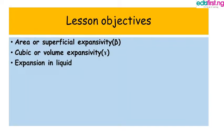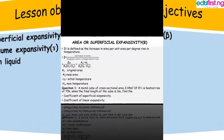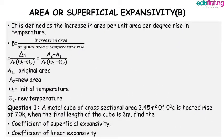When we talk about area or superficial expansivity, it is defined as the increase in area per unit area per degree rise in temperature. The formula is: beta equals increase in area over original area times temperature rise, which equals (A2 minus A1) all over A1 multiplied by (theta2 minus theta1).